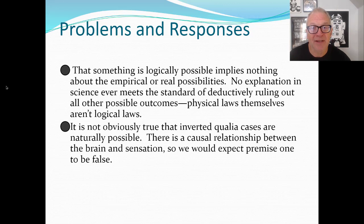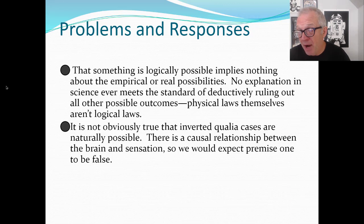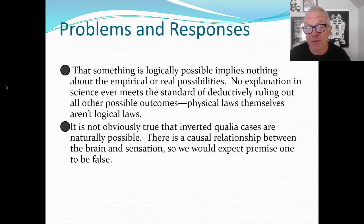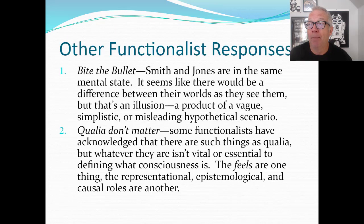Some people have argued it's not obviously true that inverted qualia cases are naturally possible. We've acted like such a thing could happen just by rewiring Smith's brain, but it might be that such a thing actually can't work like that. Maybe it's conceivable, but it's not as readily possible as we thought. There might be a direct causal relationship between the brain and sensation, meaning the evidence suggests there could not be such a difference in subjective fields without a detectable difference in structure or functional organization.